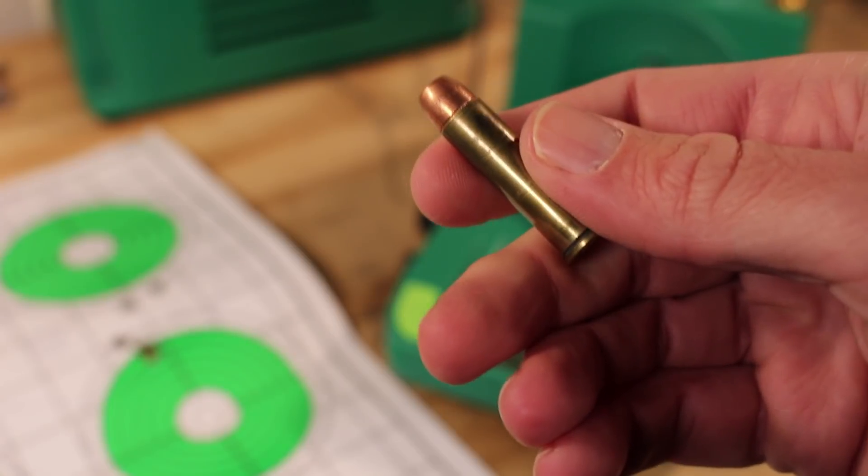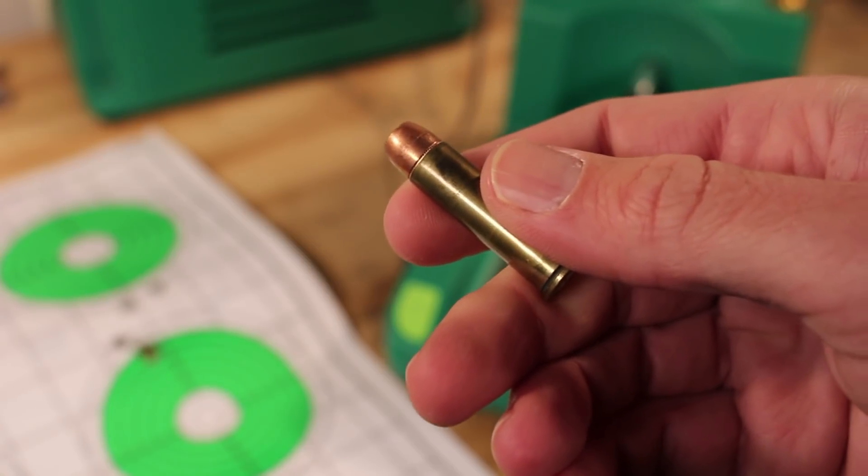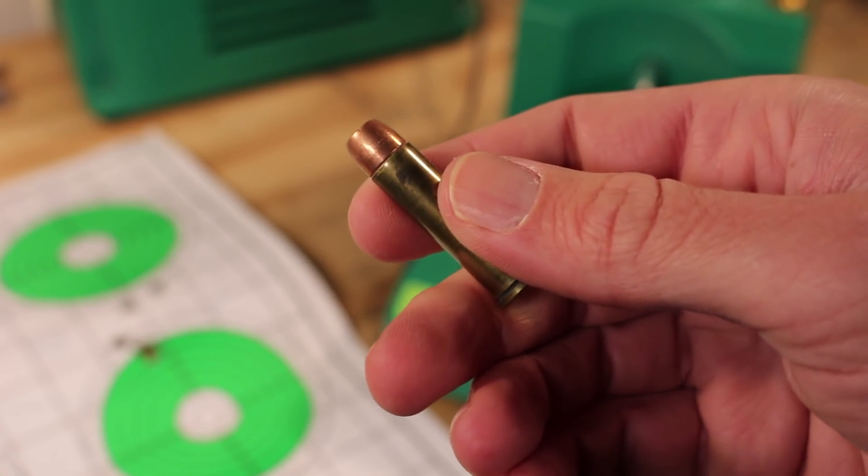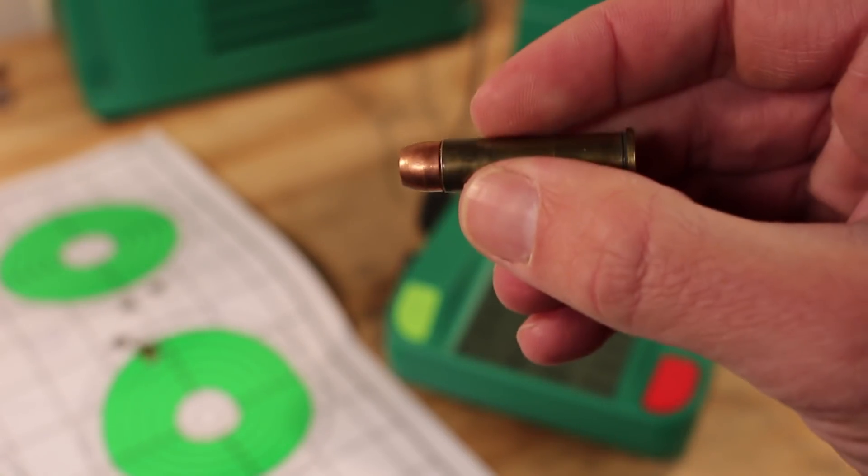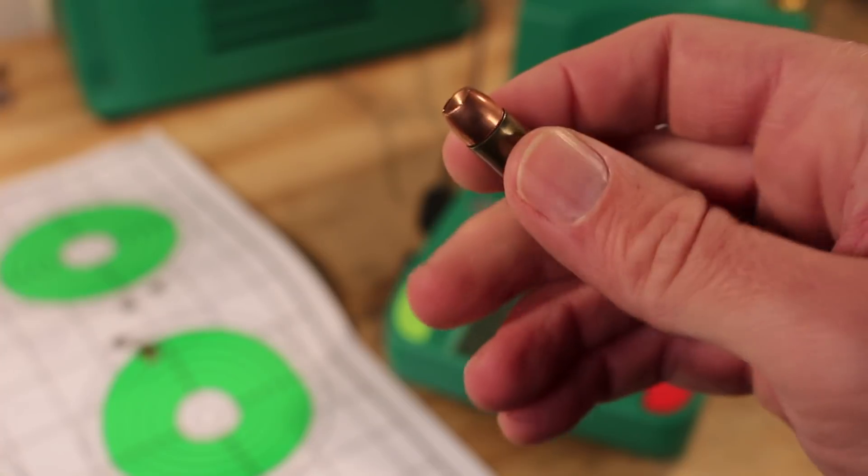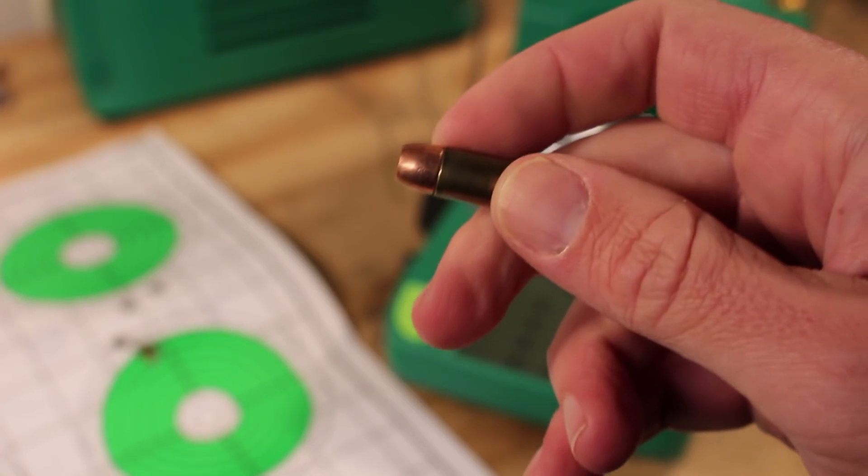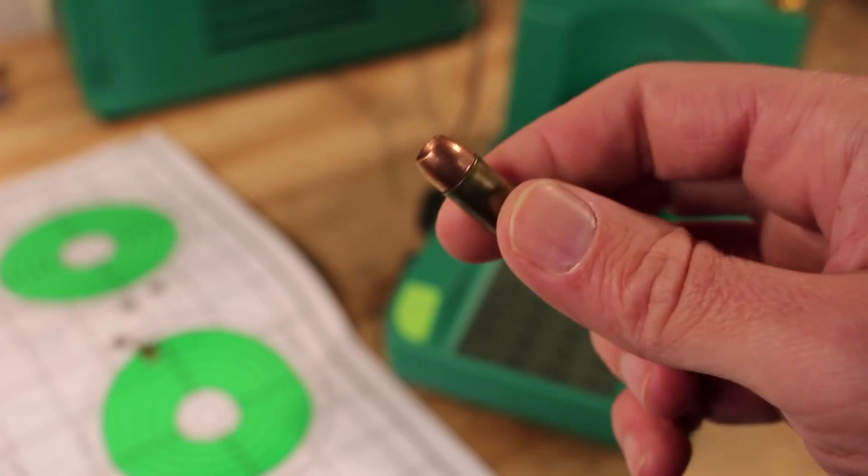If you are loading up for 350 Legend, this may work in your bolt-action rifle. It kind of depends on your magazine system. You might want to try some of these out. But in general, if you have an AR, it's not going to work. It's just too wide up front. This is going to slam into the front of the magazine and not feed.